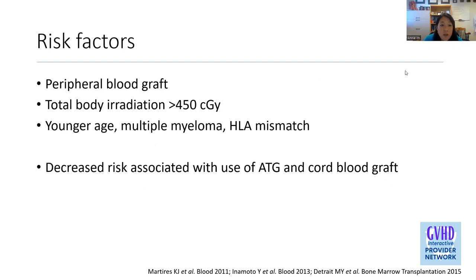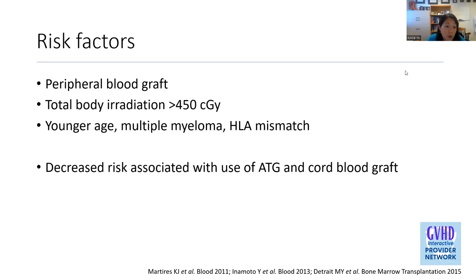In terms of risk factors, peripheral blood stem cells and total body irradiation greater than 450 centigrade have been reported. Both are also risk factors for chronic GVHD itself. Other factors include younger age, multiple myeloma as underlying disease, and HLA mismatch. Importantly, other risk factors for chronic GVHD itself have not been found to be risk factors for sclerotic skin disease specifically. There is a decreased risk associated with the use of ATG and cord blood grafts.